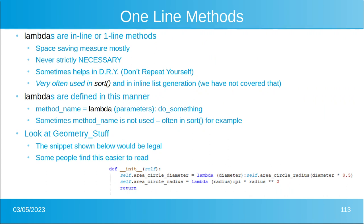Inline functions are very useful in complicated expressions and are used a lot for sorts. A one-line method or function — and it depends how you define it, since lambdas can be either methods or functions — is really mostly for saving space. It's never strictly necessary, but it often helps in not repeating yourself. It's very often used in sort and in inline list generation. Lambdas are defined like this: you give it a name, equals, the word lambda, list the parameters, put a colon, and then do something. Sometimes the method name is not used at all, and that is what you'd see in documentation referred to as an anonymous function.